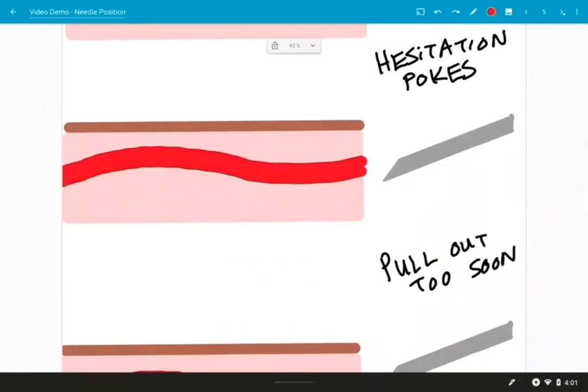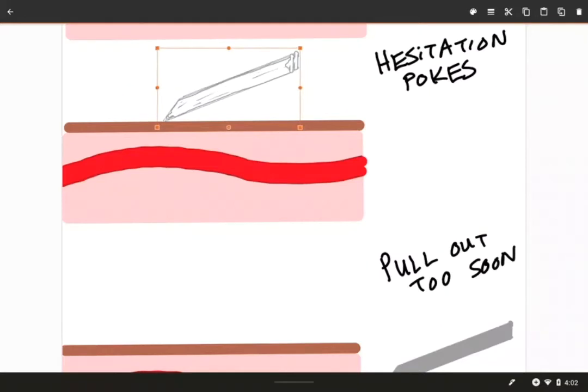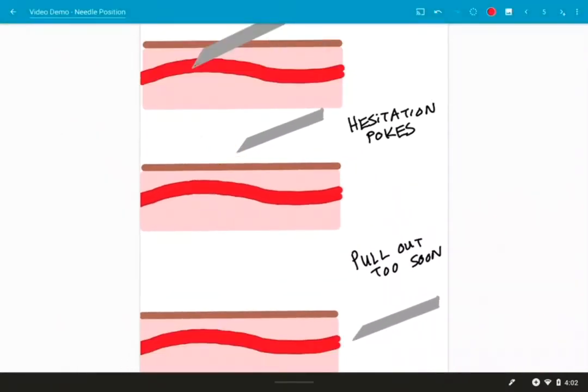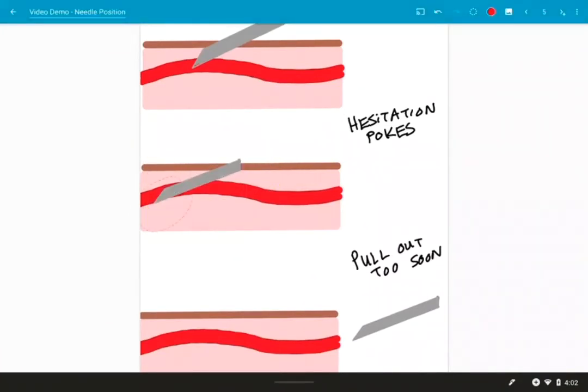If you do what I call hesitation pokes, which is when you have your needle and you're close up to the skin and you're kind of hesitating, where do I put it? I'm a little nervous. My hands are shaking. You can keep poking your patient like that. And that is going to contaminate your needle. Once you put it in and then take it out, there's going to be bacteria on the tip of your needle. And then when you put that needle all the way into the vein, the bacteria on the needle will get into your vein.